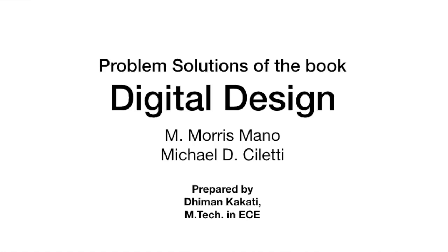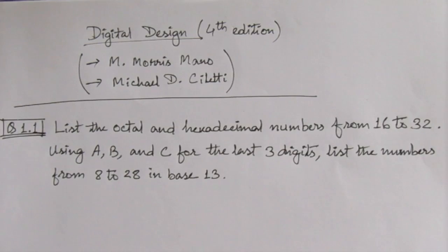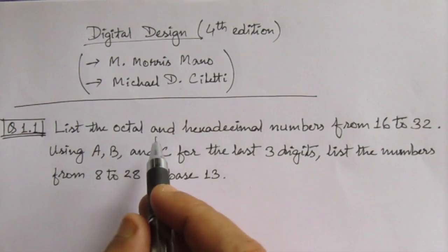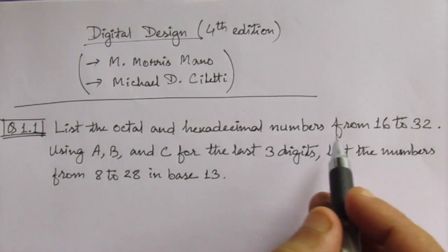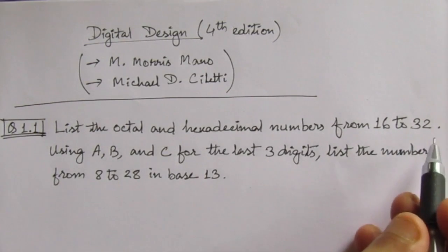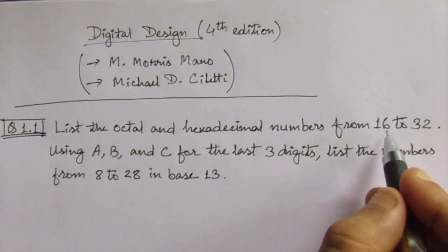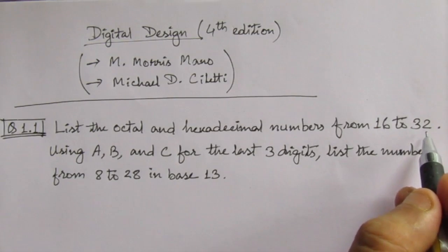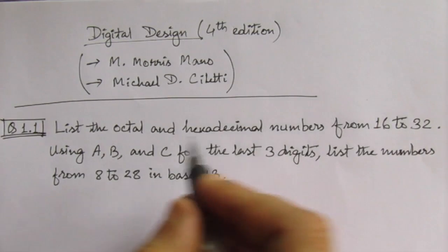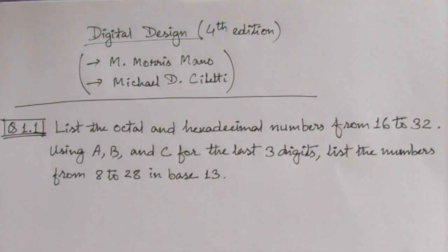Dear students, I am going to start a solution series of the problems given in the book Digital Design, 4th edition by Maurice Mano and Michael D. Cileti. The first problem is: list the octal and hexadecimal numbers from 16 to 32. That means from 16 to 32, these are the decimal numbers, and we have to find out their respective octal and hexadecimal numbers.